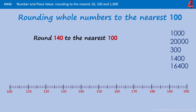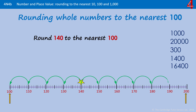We're going to round 140 to the nearest 100. You can see where 140 is on the line and we have the multiples of 100 either side of 140 — that's 100 and 200. You can see that 140 is nearer to 100 than it is to 200. So when we round 140 to the nearest 100, it's 100.